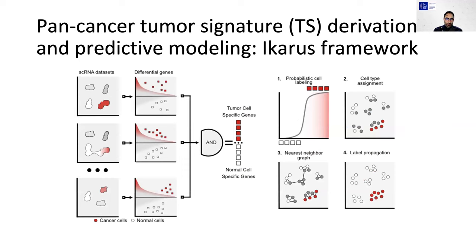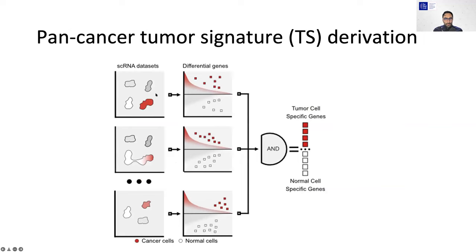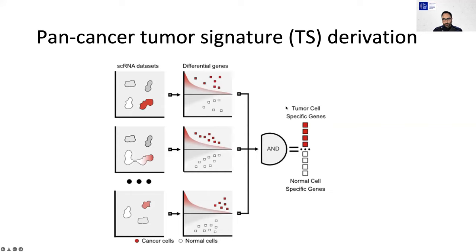What we have developed is a framework for deriving pan-cancer tumour signatures and predictive modelling — we call this ICARUS. There are two sections: first, we derive the signature; the second is a machine learning prediction part. The first part relies on having good quality single-cell RNA sequencing datasets where we have reasonable information on the cell types — either they are sorted, or researchers have done a good job annotating them. For each dataset, we identify differential genes defining tumour cells versus normal cells and then combine them. We are left with a set of tumour-specific genes and normal cell-specific genes coming from multiple datasets.